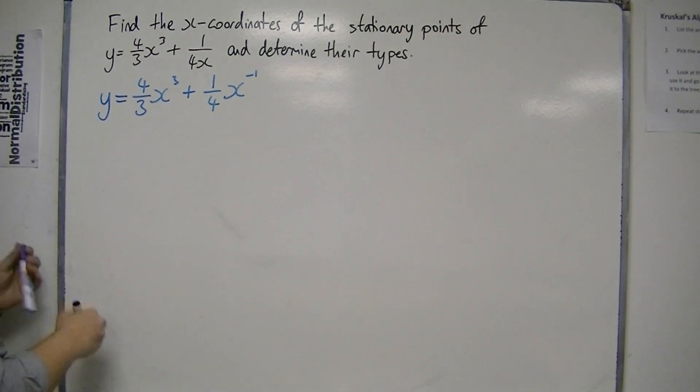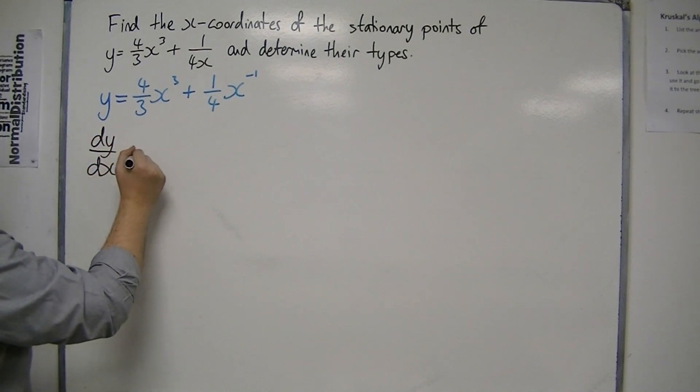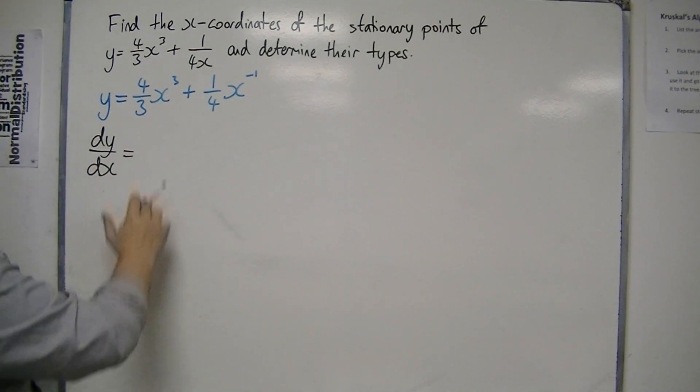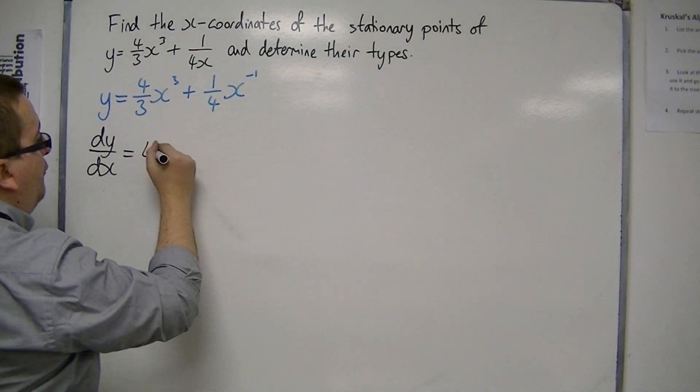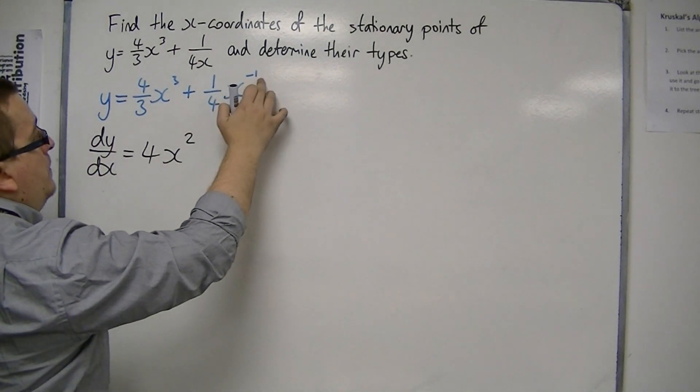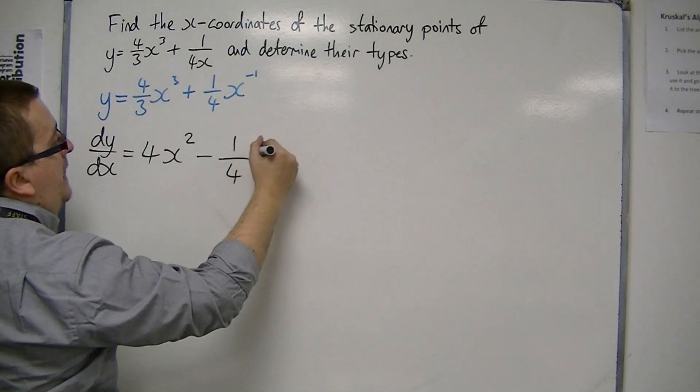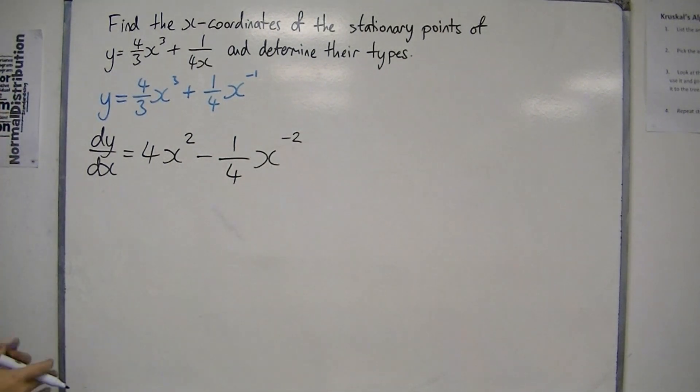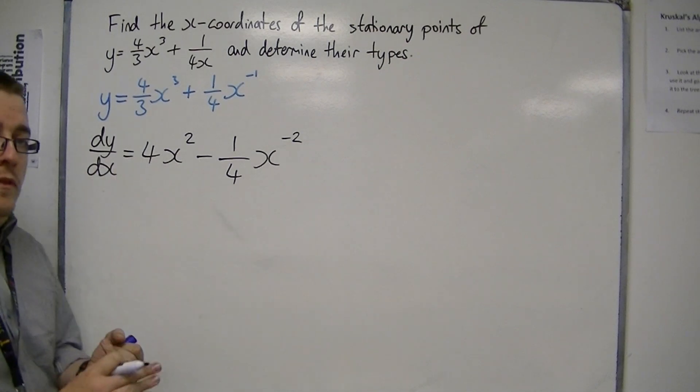Now I can differentiate it. I need to differentiate it in order to find the stationary points. So dy/dx, the 3 can come down to the front, 4/3 times 3 is just 4, take 1 off the power, and then the index here can come down to the front, so I'm going to have -1/4 x, take 1 off the power, so I've got to the -2. Now that's our first derivative.